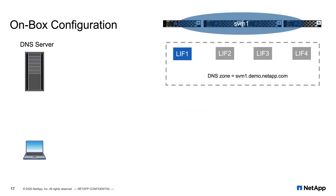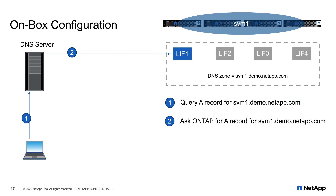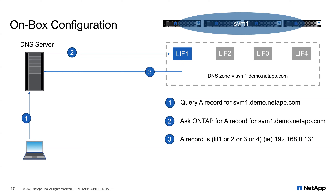What does this look like on the wire? A client makes a DNS call to its configured DNS server looking for svm1.demo.netapp.com. The DNS server knows it has a delegation for that zone and should reach out to the listener LIF. It asks ONTAP for an A record for svm1.demo.netapp.com. ONTAP does its calculations with the algorithm and returns the result back to the DNS server — not directly to the client. The DNS server then returns that back to the client, and the client makes a connection to the LIF returned by the algorithm.